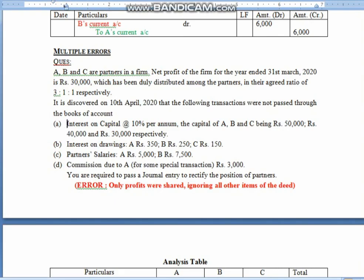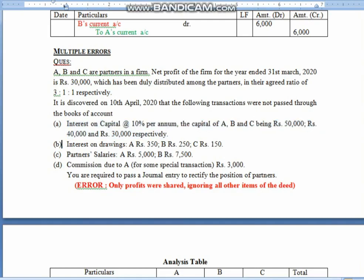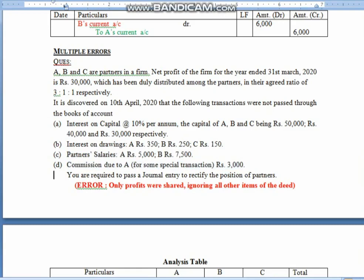What were the omissions? Interest on capital at 10% — A's capital is 50,000, B's capital 40,000, and C's capital 30,000 — this was omitted. Then interest on drawings — the penalty on partners — was also forgotten. Then partner's salary to A and B was also forgotten. Then commission allowed to Mr. A of 3,000 was also forgotten. The question requires you to pass a journal entry to rectify the position of partners.